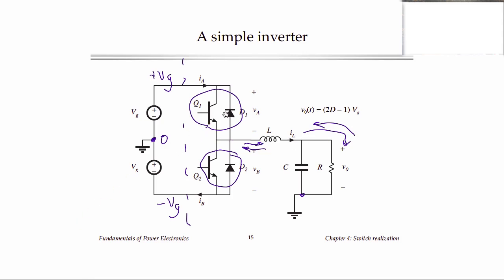On the other hand, the switches block the DC input voltage. So for example, if the top switch is on and the bottom switch is off, then this node gets pulled up to plus VG, and the voltage across the lower switch will be plus VG minus minus VG, or 2VG. But it's DC.